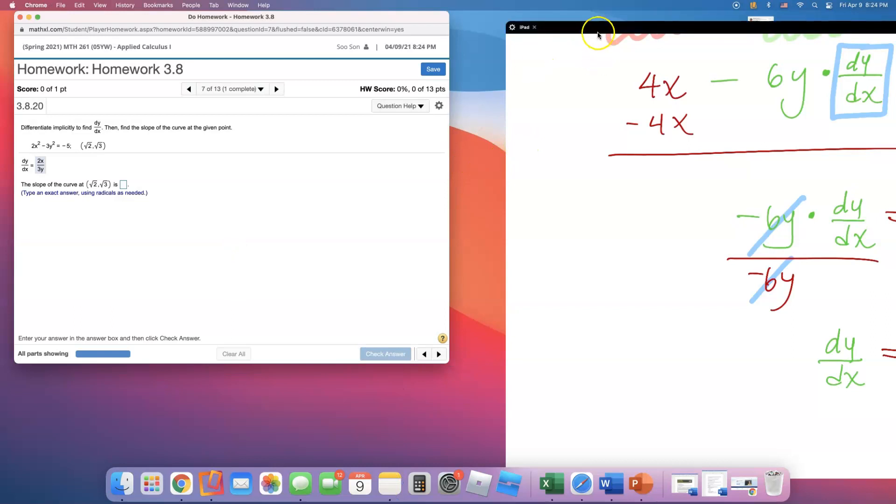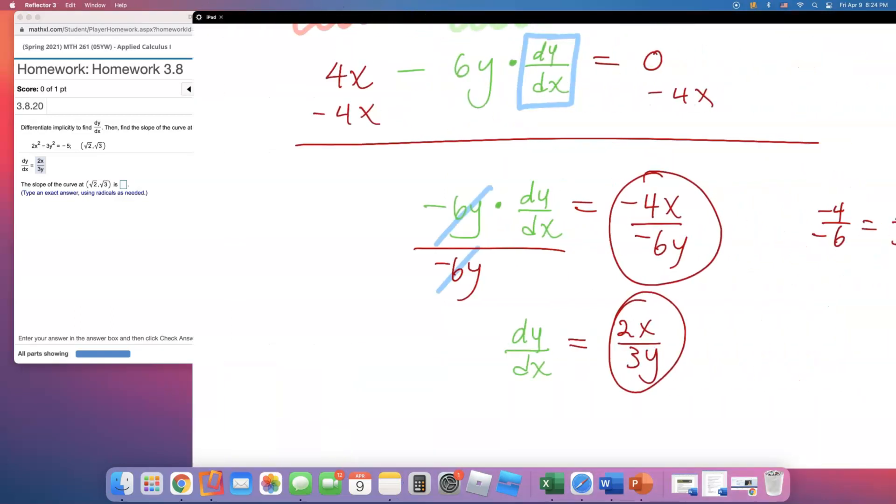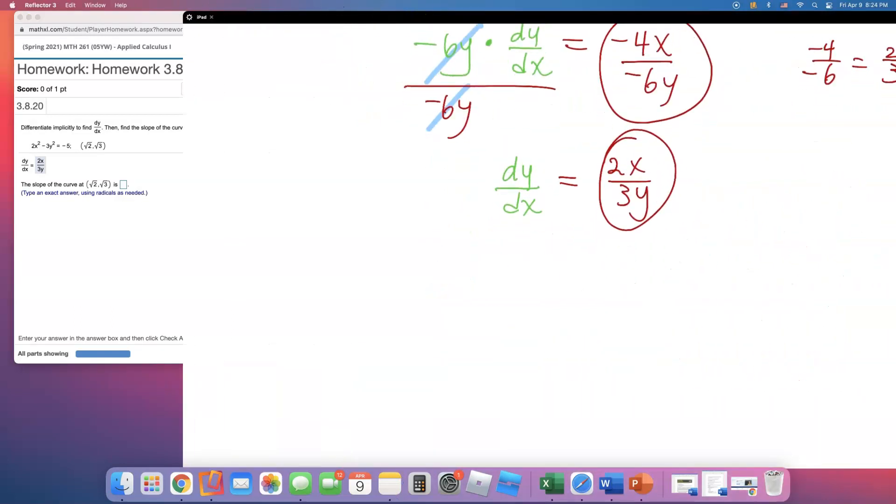And we're going to now plug it in. I don't know what you meant by this looks different. Oh, the point looks a little different. Square root of 2 and square root of 3. That's just your x and this is your y. So if I plug in x in here,